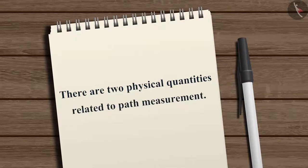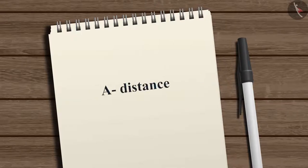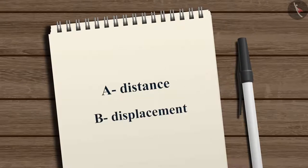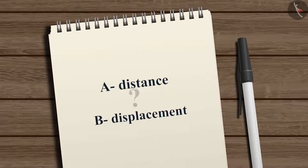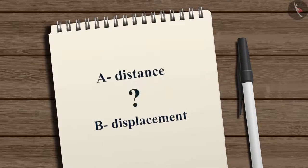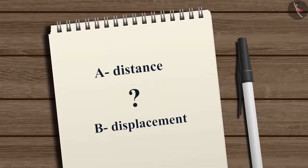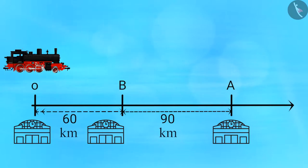We can take an example to understand the difference between the two quantities more clearly. Suppose a train starts its journey from station O - we are considering station O as a reference point. Its first stop is 60 kilometers away from O, which is station B.